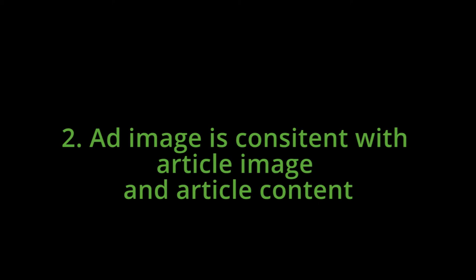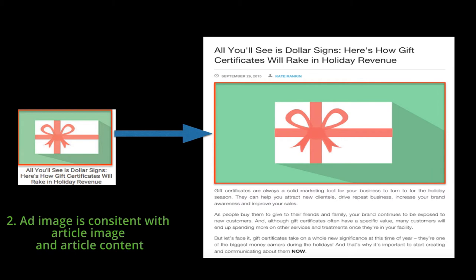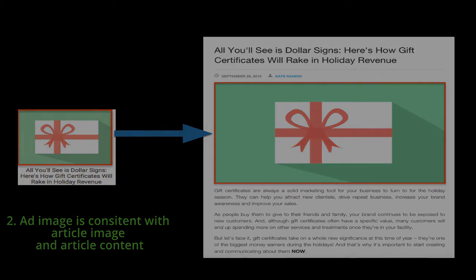Number two: the ad image is consistent with the article image and article text. Looking at the same example again, you can see that the article image — the gift — is the same as the image on the actual article. And also, it's a gift and the article is about gift certificates in the holiday season. So you can see the consistency and congruence there.